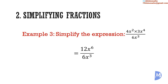Divided by 6x to the 3rd power: 12 divided by 6 is equal to 2. And remember, when we are dividing quantities with the same base, we subtract their powers. So x to the 6th power divided by x to the 3rd power is equal to x to the 3rd power. The answer is 2x to the 3rd power.